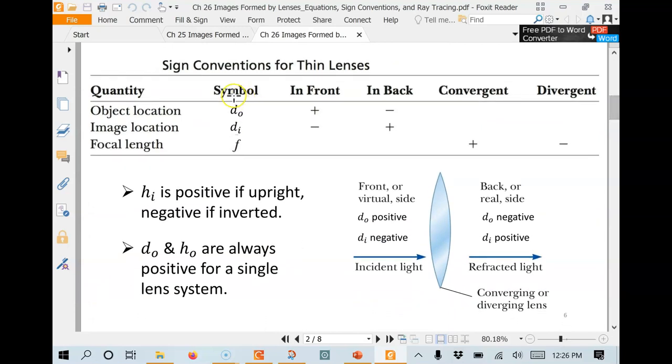So our symbols for the object distance, image distance, and the focal length. First of all, if it's a converging lens, this is a converging lens in this picture, it's going to be positive F. So we used a positive for F, 10 centimeters, positive, good.